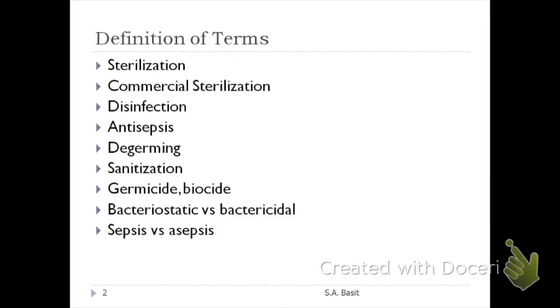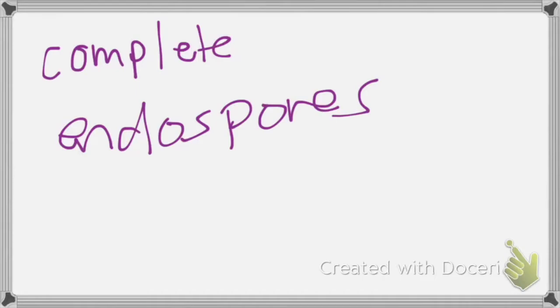When we say sterilization, it refers to the complete removal of all forms of microorganisms, all forms of living things. Sterilization means complete removal of all forms of living things, including the bacterial endospores. We know that endospores of bacteria are the hardest to eliminate because of the presence of calcium dipicolinate, which makes them very hard to eliminate.